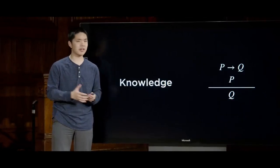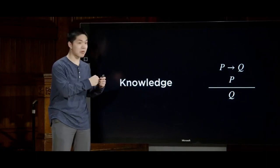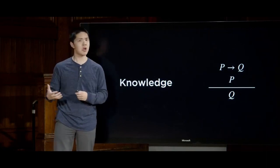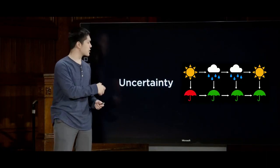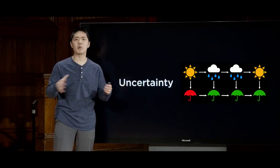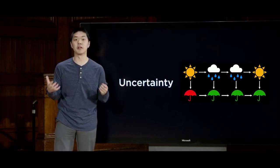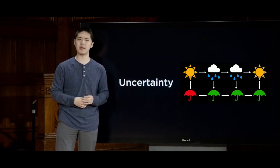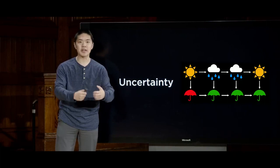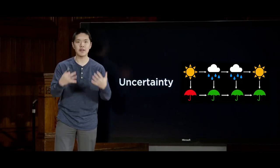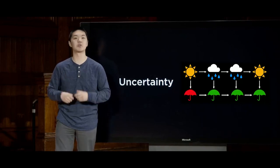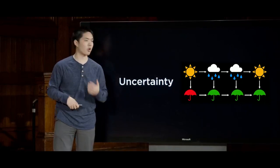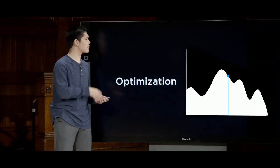We'll then look at how AI can represent information — both knowledge that our AI is certain about, but also information and events about which our AI might be uncertain — learning how to represent that information, but more importantly, how to use that information to draw inferences and new conclusions as well.